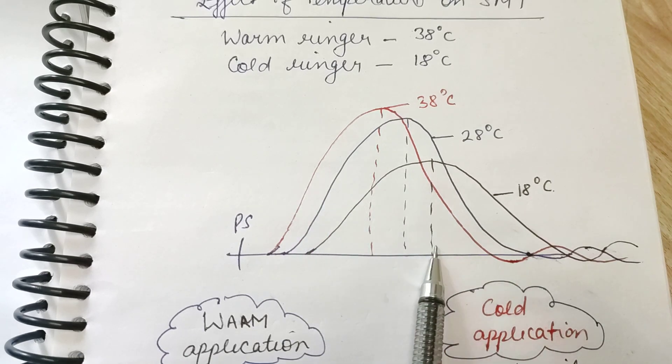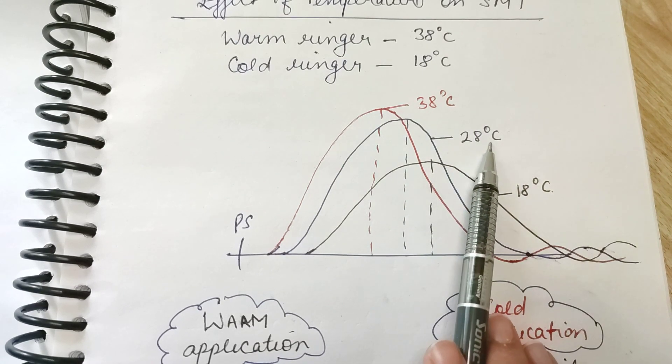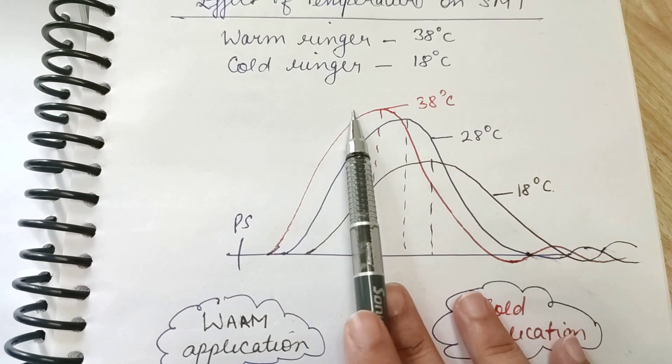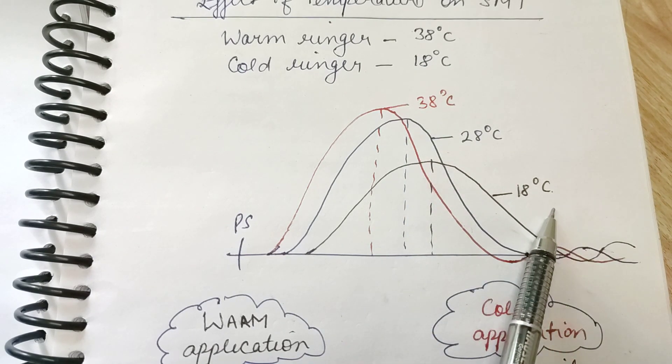You can be asked what is your observation and what are the causes behind it. So this 28 degrees Celsius is the normal temperature. On warm application, the graph looks like this at 38 degrees Celsius.